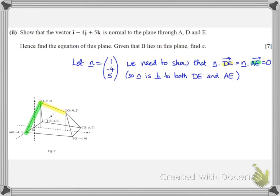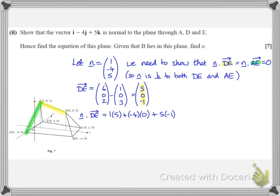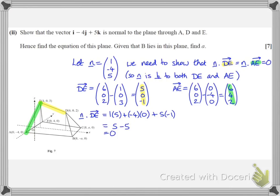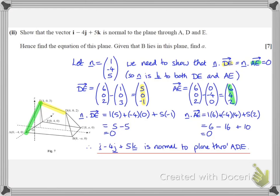For the direction of DE: D minus E gives 6,0,2 minus 1,0,3 = 5, 0, minus 1. Dotting with n: 1×5 + (−4)×0 + 5×(−1) = 5 + 0 − 5 = 0, which is what we needed. For AE: it works out as 6, 4, 2. Dotting n with AE: 1×6 + (−4)×4 + 5×2 = 6 − 16 + 10 = 0. Therefore, i minus 4j plus 5k is normal to the plane through A, D, E.